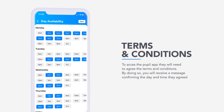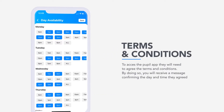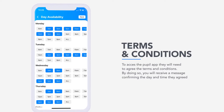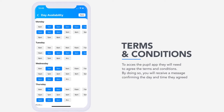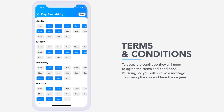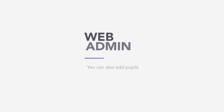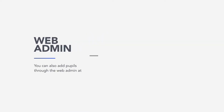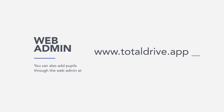To access the Pupil app, they will need to agree to your terms and conditions. By doing so, you will receive a message confirming the date and time they agreed to your terms digitally. You can also add pupils through the web admin at www.totaldrive.app.